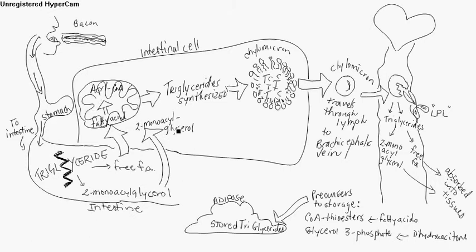The two monoacetylglycerol is in the intestinal cell. Triglycerides are synthesized again in the intestinal cell, put back together. It has to do with how things get absorbed.